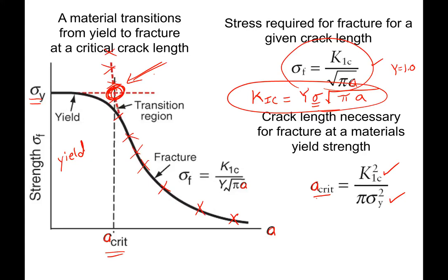Cracks smaller than the critical value will just result in yielding of the material, so the material can be used in design and will fail in a predictable ductile way. But once you get cracks larger than that value, then we have brittle failure or fast fracture.